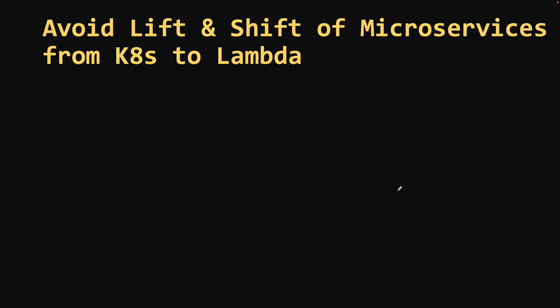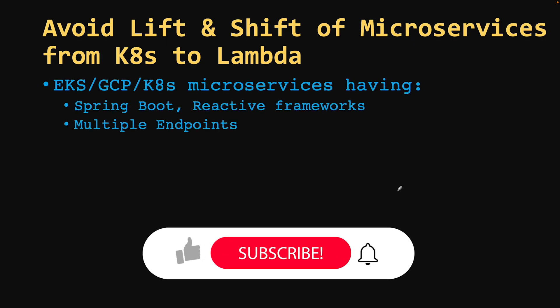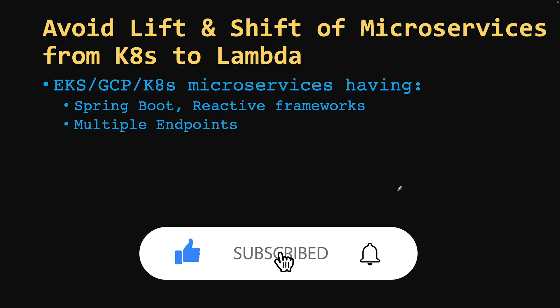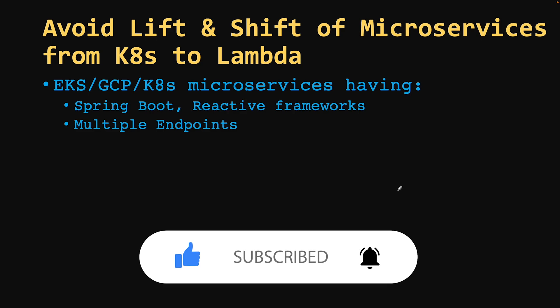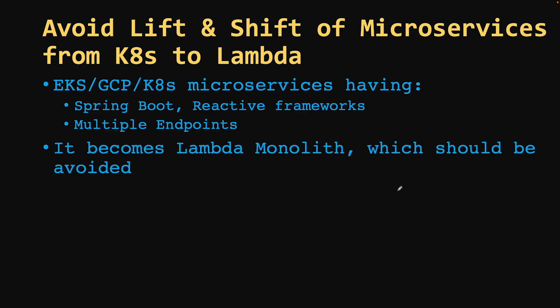Avoid lift-and-shift of microservices from Kubernetes to Lambda. I've seen most people simply lifting and shifting microservices from Kubernetes to Lambda, which is a bad practice. Kubernetes is meant for scalable container architecture that is always on, but Lambda is on demand. When your compute is on demand, you can't compromise on startup times and operational complexity. People run complex microservices with multiple endpoints, Spring Boot, and reactive frameworks all in one single Lambda, which makes it a Lambda monolith — and that should be avoided.